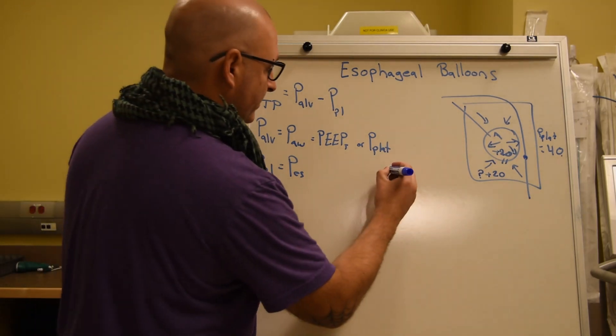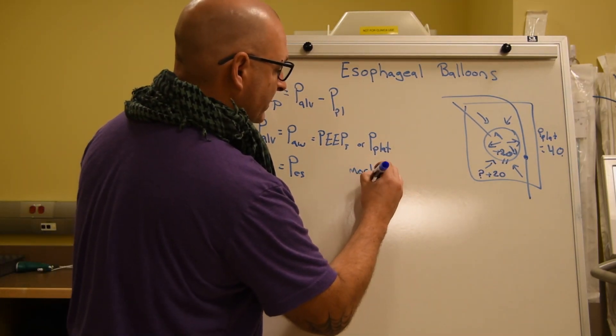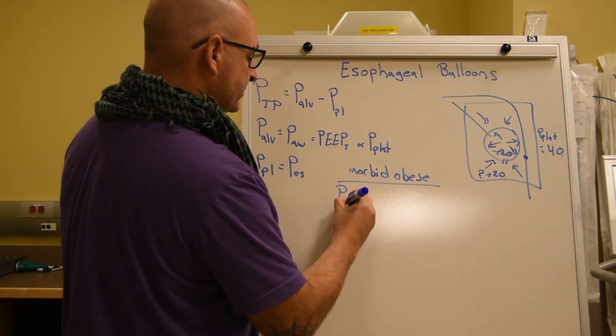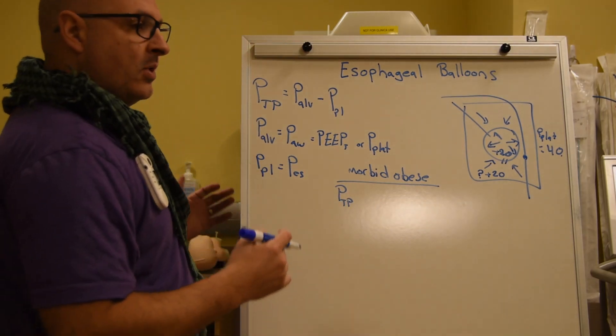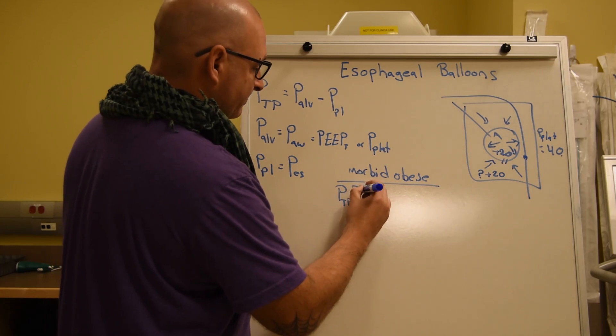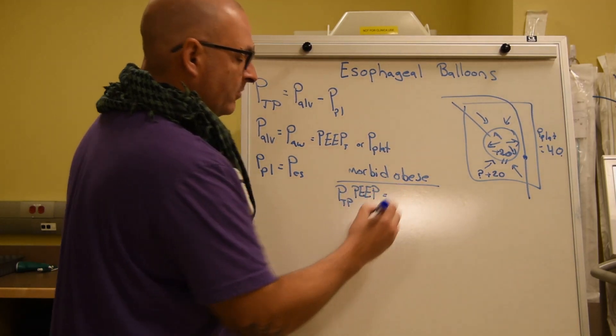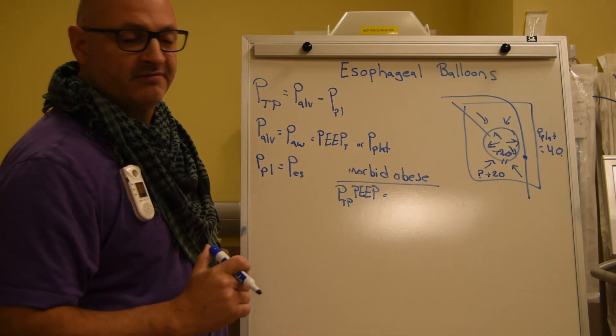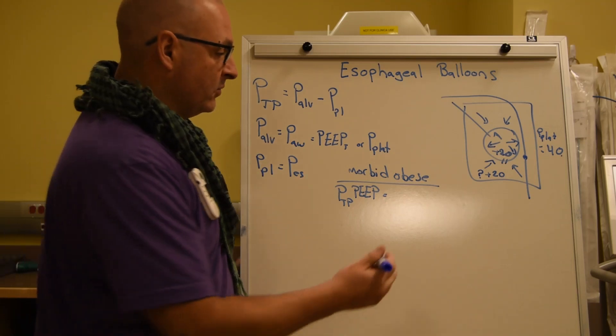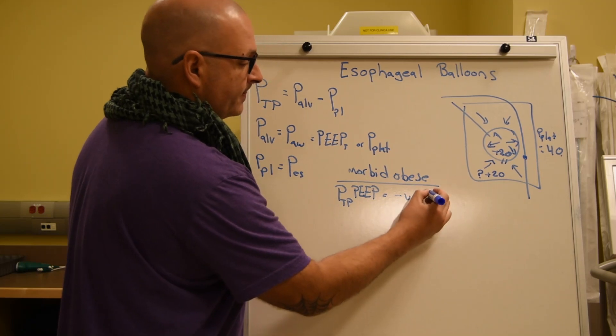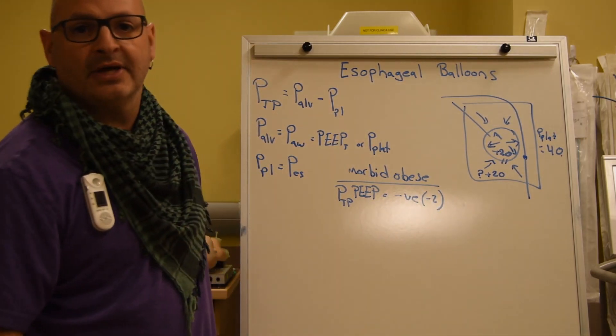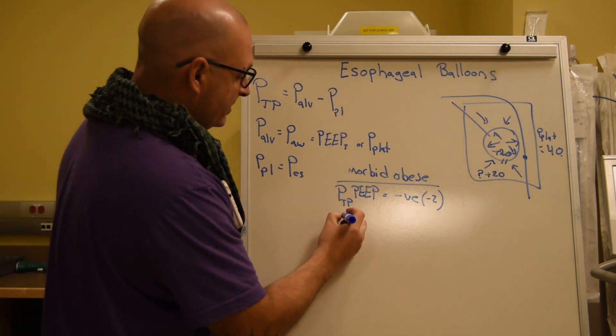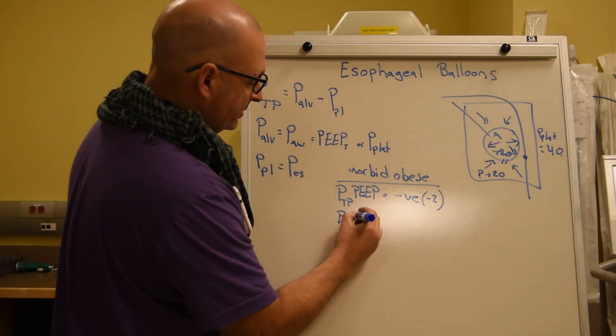Patient number one: we are morbidly obese. If we were to assume, or guess, what their transpulmonary PEEP would be, well, we all know we're fairly conservative with our PEEP, and nine times out of ten, we're not applying enough. With our morbid obese, we would actually guess that we would be at a negative value, maybe minus two. It might be close, but we're not optimizing.